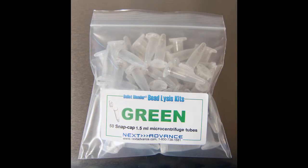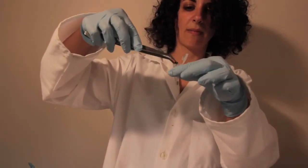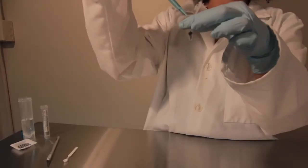Here is a green kit tube, which is used for tough samples that are under 50 milligrams. If your tough samples are over 50 milligrams, use a navy kit tube. Load your samples into the tube and add a volume of buffer equal to twice the volume of beads that you are using.